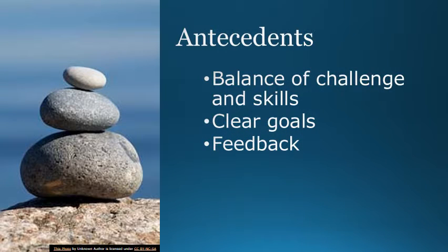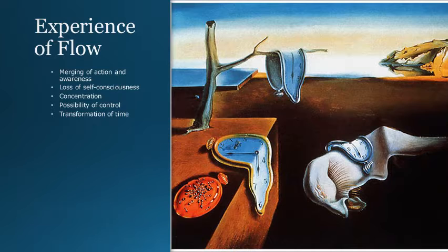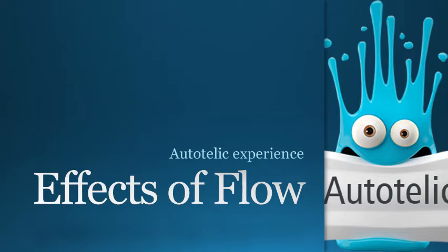Antecedents are activities or situations that generate the state of flow. They include things like the balance of challenges and skills, as well as clear goals — which most online courses have as part of their design — and immediate feedback, which can be incorporated through quizzes and peer reviews. The experience of flow itself had five characteristics: merging of action and awareness, loss of self-consciousness, concentration, a sense of control over what they are doing, and the transformation of time. Finally, the effect of flow was the autotelic experience — enjoying the experience for the sake of the experience itself.